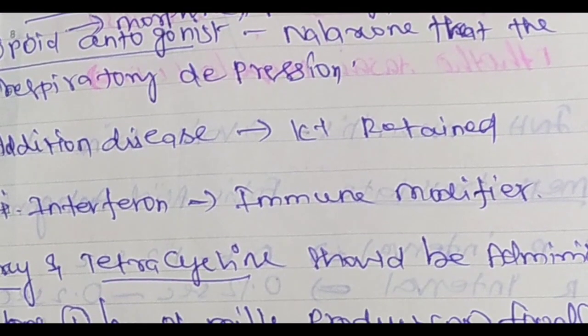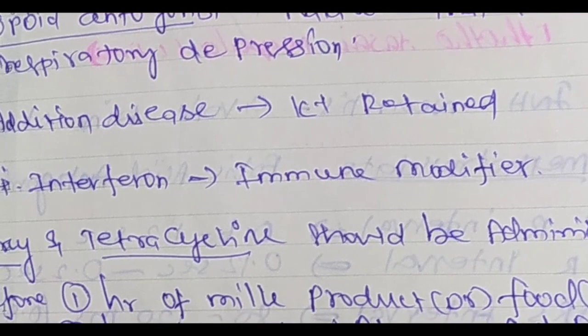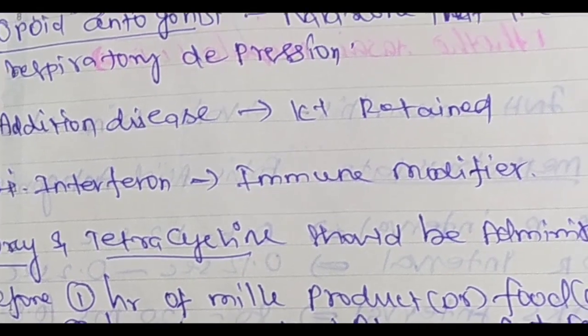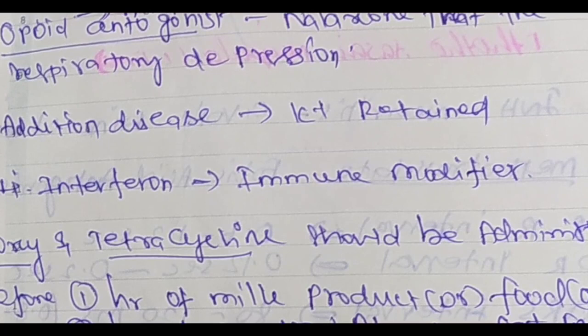Addison's disease — potassium is especially relevant. Addison's: potassium. Interferon is an immune modifier. Note: interferon is classified as an immune modifier.